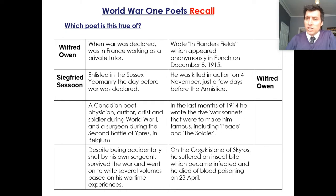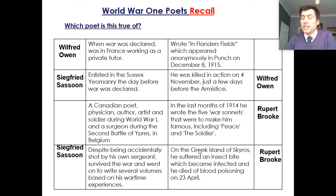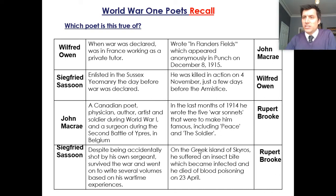Sassoon joined the Sussex Yeomanry just before the war started in 1914 and he was accidentally shot by his own sergeant, but he did survive the war. Rupert Brooke wrote those war sonnets and he also died in Greece. John McCrae was the poet we're looking at today — he wrote 'In Flanders Field' and he was Canadian. He was also a musician, author, and artist, so quite a collection of professions and skills.